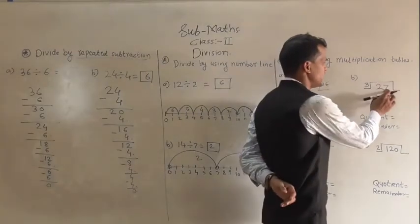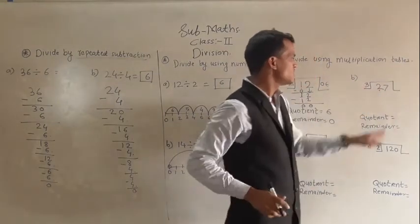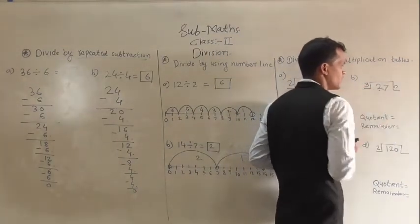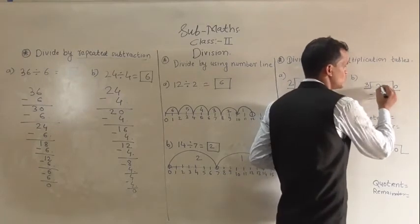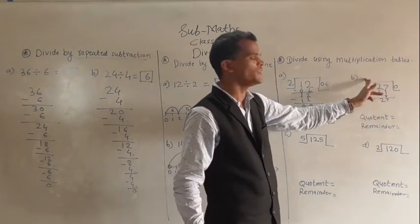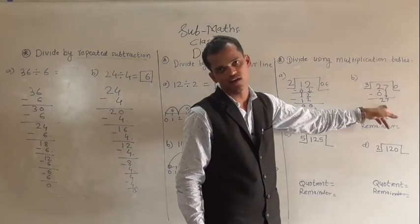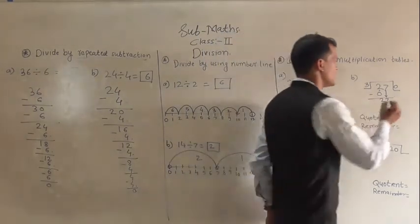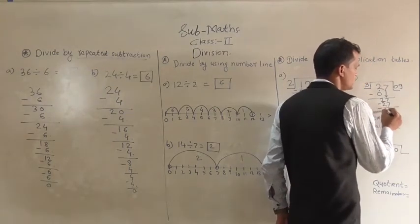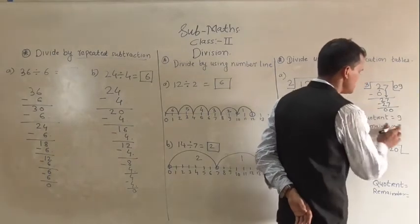Next example: 27 divided by 3. The first digit is 2, which is smaller than 3, so 2 is not divisible by 3. Write 0 here and subtract 0 from 2: 2 minus 0 is 2. Take the 7 down to get 27. Check whether 27 comes in the table of 3: 3 nines are 27. So write 9 here and subtract 27 from 27: 7 minus 7 is 0, 2 minus 2 is 0. The quotient is 9 and the remainder is 0.